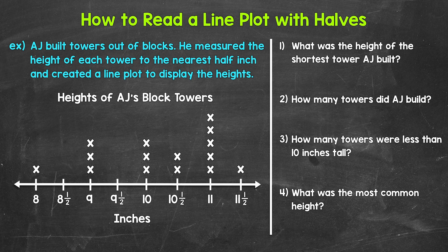Looking at the line plot, we have a title up top that tells us what the line plot is about. The title says Heights of AJ's Block Towers. We have our number line that starts at eight and counts up by one half to eleven and a half. Underneath the number line we have inches — that's our unit of measure, telling us what the numbers on the number line represent.